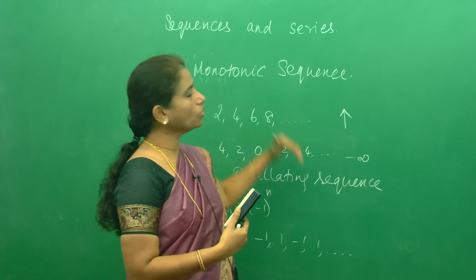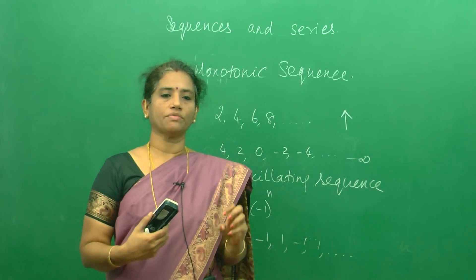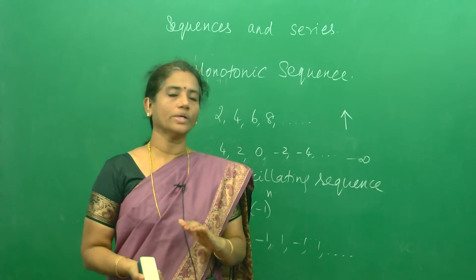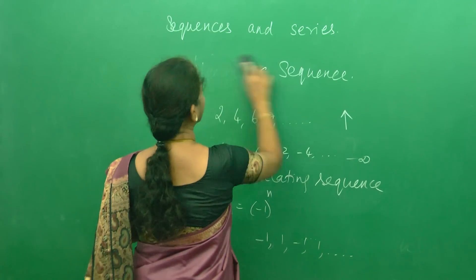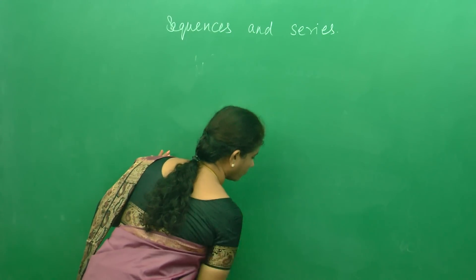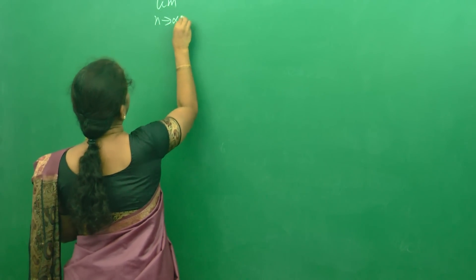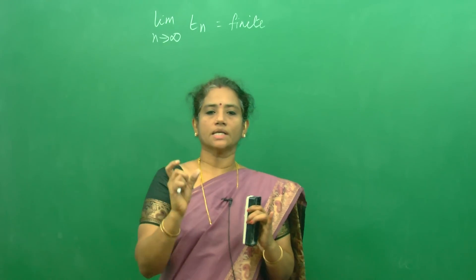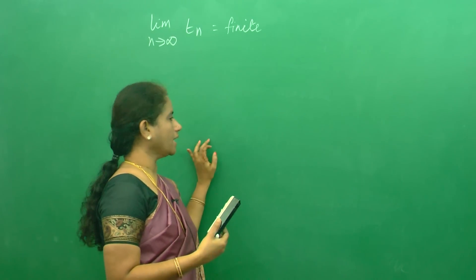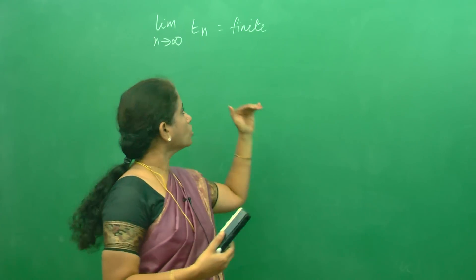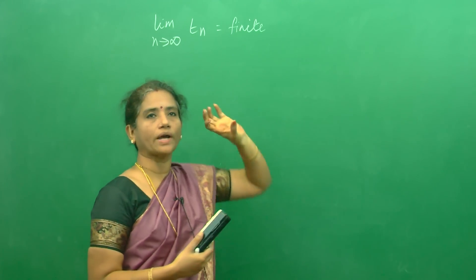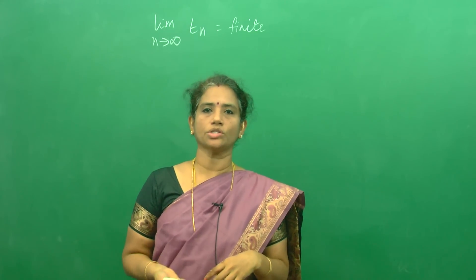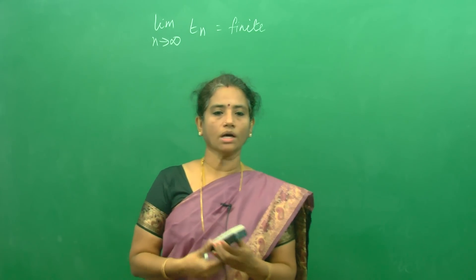Now, after you know the concept of all the sequences, we are going to specifically find out how to determine whether a sequence is converging or diverging. The first very important rule: if the limit as n tends to infinity of the nth term of a sequence is finite, we say the sequence is convergent. The nth term should be finite — that is what we have been explaining. So we are going to find the limit as n tends to infinity of Tn and check whether the sequence is convergent or not.